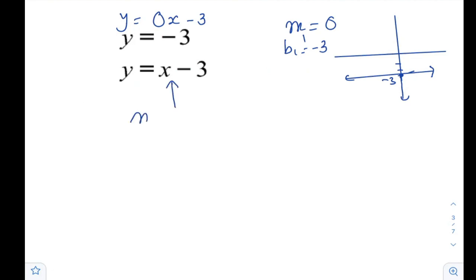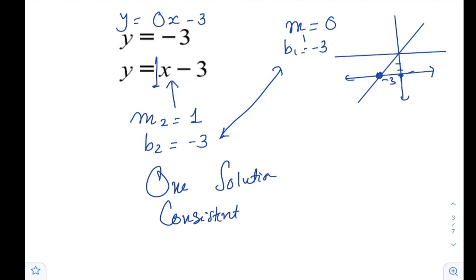For the second line, you have slope is 1. There is nothing here, it means 1x. And b2 is minus 3. Comparing slopes are different, though the y-intercept is the same, but we don't care. So we have one solution. That one will look like this. So you should expect that there is one solution. There is an intersection. That means the system is consistent.